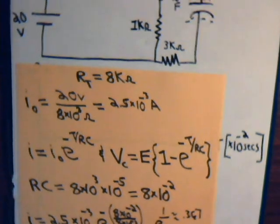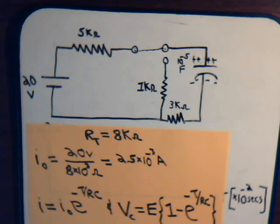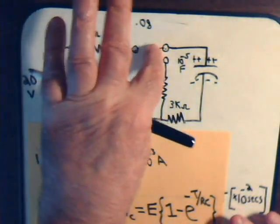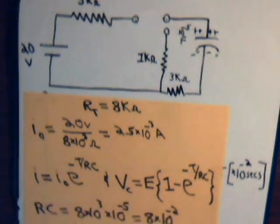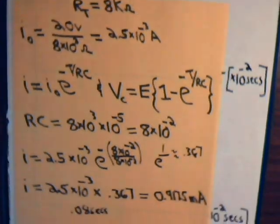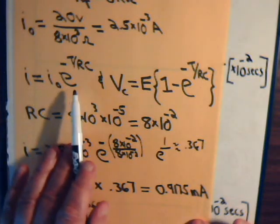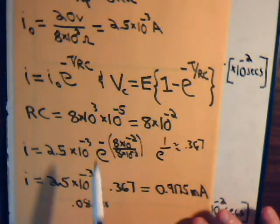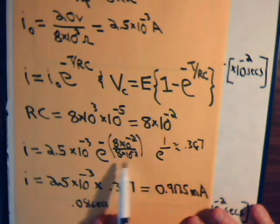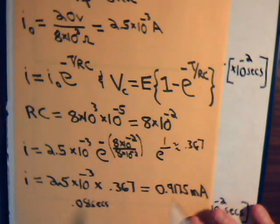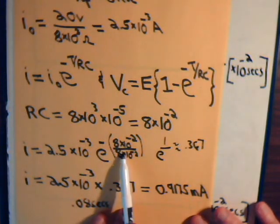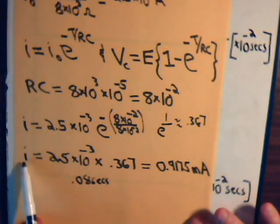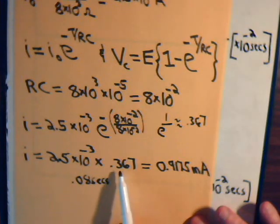What happens if we make our connection, leave it connected for 8 hundredths of a second, and then break the connection? The equation for current is: i equals the initial current of 2.5 milliamps times e to the minus t over RC. RC is 8 times 10 to the minus 2, and t is that same amount, so we have e to the minus 1, which is 1 over e, approximately 0.367. So i equals 2.5 milliamps times 0.367.